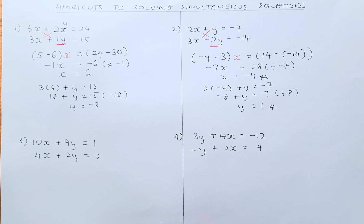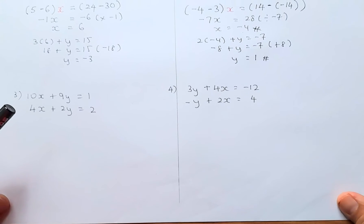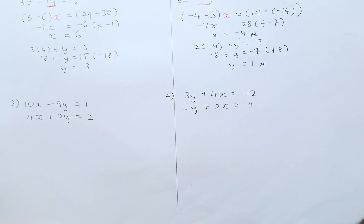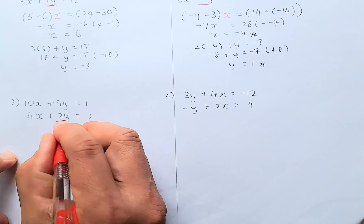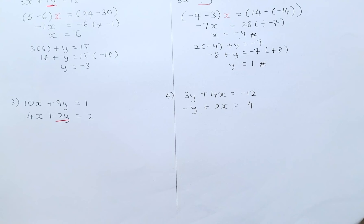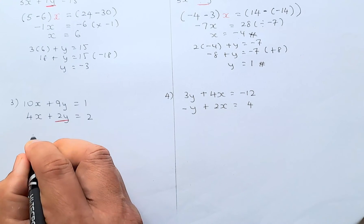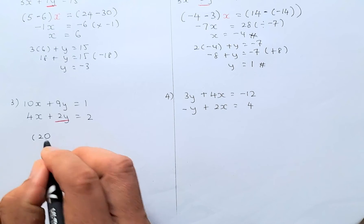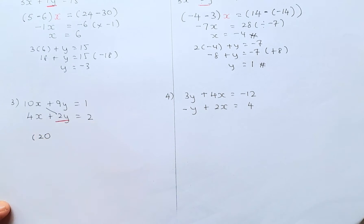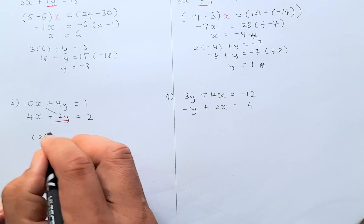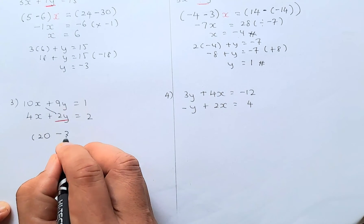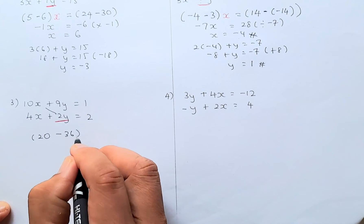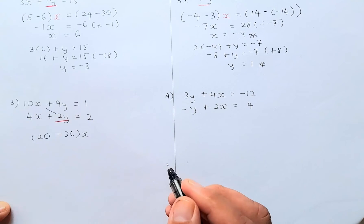Let's do a bit faster now — once you get the hang of it. So now you have 10x plus 9y equals 1, and 4x plus 2y equals 2. So the pivot is here: 2. We're going to do 2 times 10 is going to be 20. And then you minus 4 times 9 is going to be minus 36. And you're going to put x because x starts first.